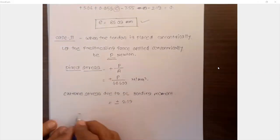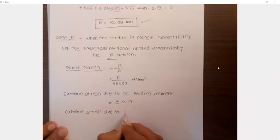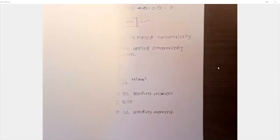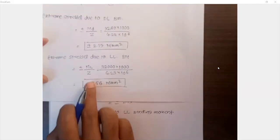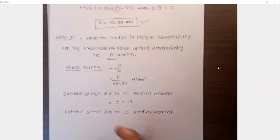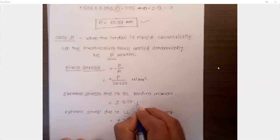Next, we have to calculate the extreme stress due to dead load bending moment. Stresses due to dead load we have calculated as plus or minus 7.56 Newton per mm².